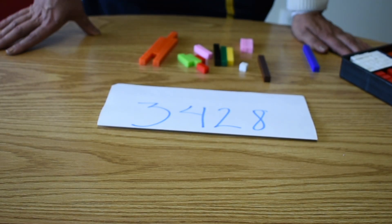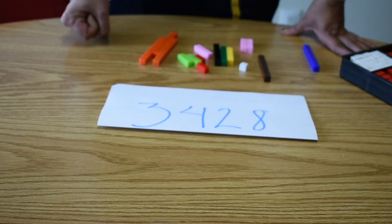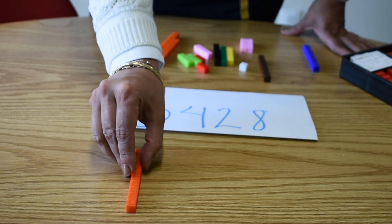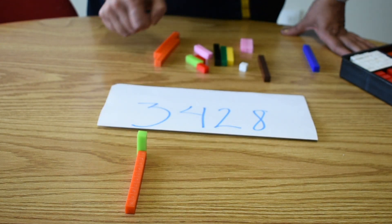Now, we are going to represent numbers. For example, 3,428. So first of all, we have to put the thousands with an orange one and a green one.